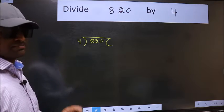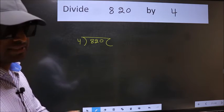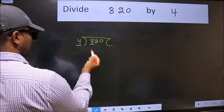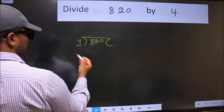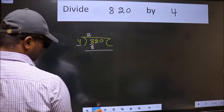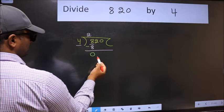This is your step 1. Next, here we have 8 and here 4. When do we get 8 in the 4 table? 4 twos, 8. Now we should subtract. We get 0.